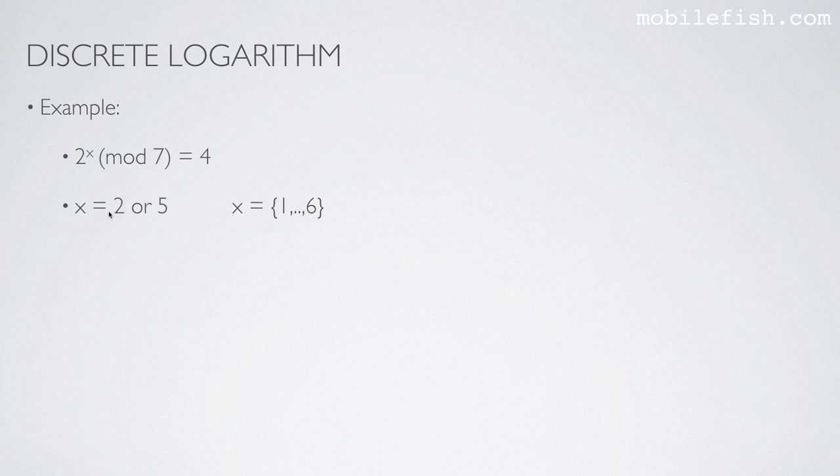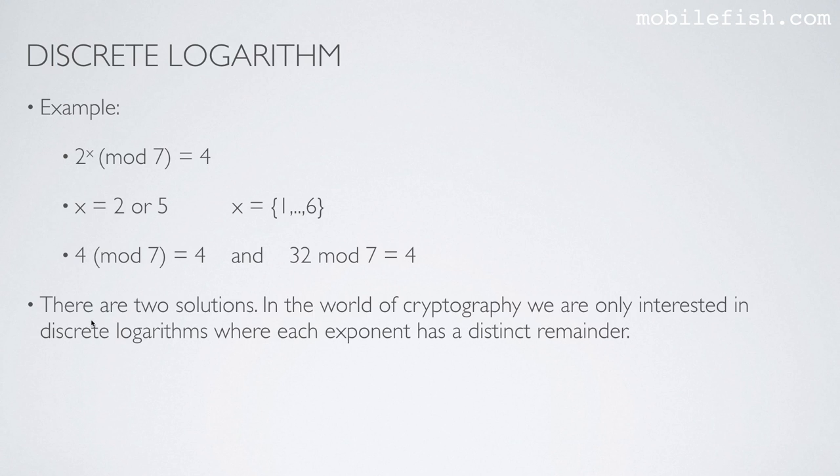Well, the answer is x can be 2 or 5, if x is 1 till 6. 6 is because of the modulo 7 minus 1. Here is the proof: 2 to the power of 2 is 4, 4 mod 7 is of course 4. 2 to the power of 5 is 32, 4 times 7 is 28, and 32 minus 28 is 4. There are two solutions.